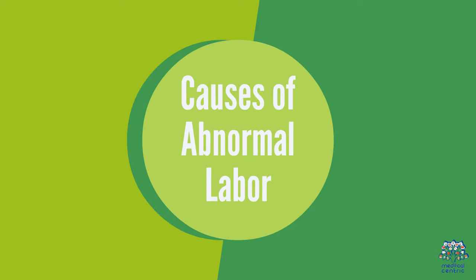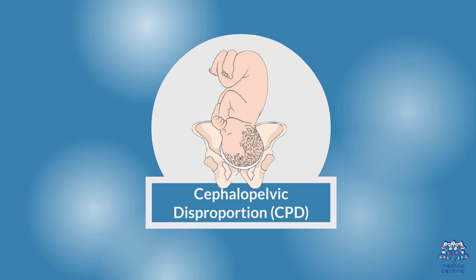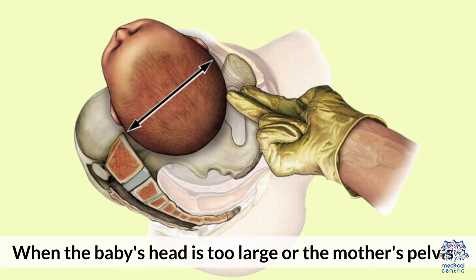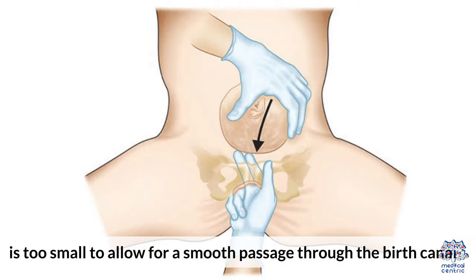Causes of abnormal labor. 1. Cephalopelvic disproportion (CPD): when the baby's head is too large or the mother's pelvis is too small to allow for a smooth passage through the birth canal.